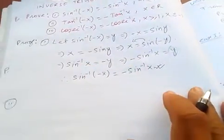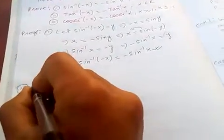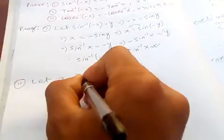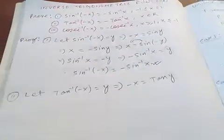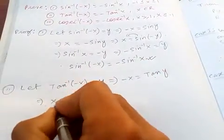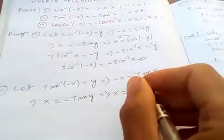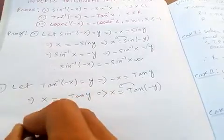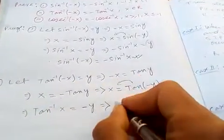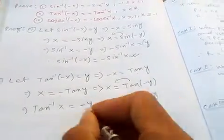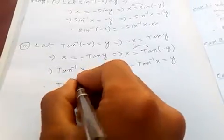For the second identity, let tan inverse of minus x equal to y, which means minus x equals tan y. If you multiply both sides by minus, x equals minus tan y. We know from trigonometry that minus tan y equals tan of minus y. Transferring here, we get tan inverse of x equals minus y. Multiplying both sides by minus, minus tan inverse of x equals y. So tan inverse of minus x equals minus tan inverse of x.